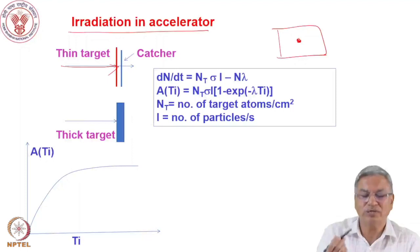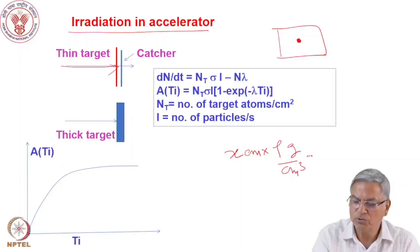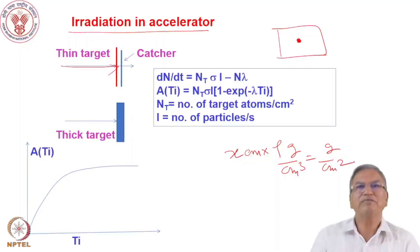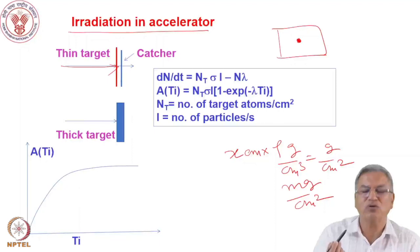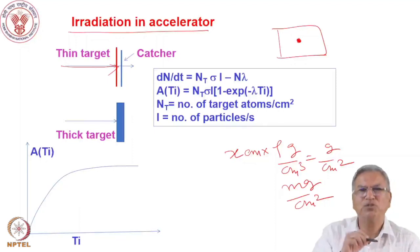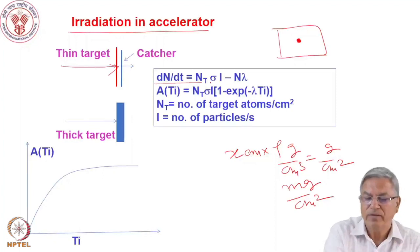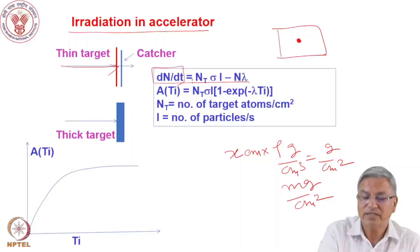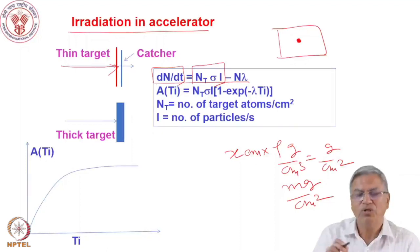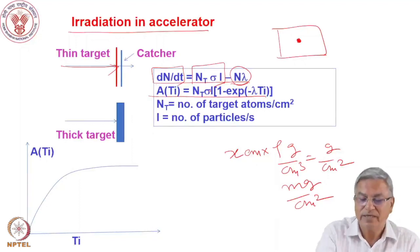Target thickness is written in gram per centimeter square, or typically milligram per centimeter square, corresponding to micron-scale actual thickness — because you do not want to stop the beam, as that would generate heat and reduce the energy. The rate of production of radioisotopes is dN/dt = N_t σ I − Nλ, where instead of flux we now have I, the intensity of the projectile beam (particles per second). The solution is similar: activity = N_t σ I × (1 − e^(−λt_i)), the reaction rate times the saturation factor.